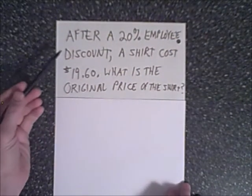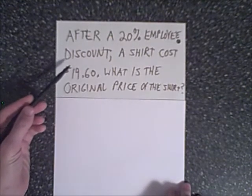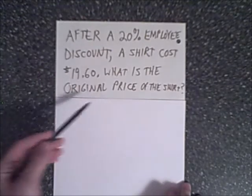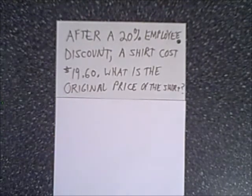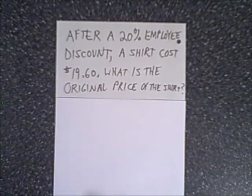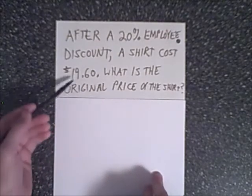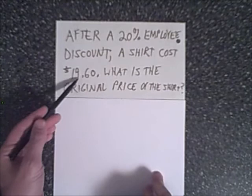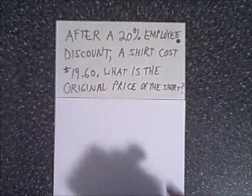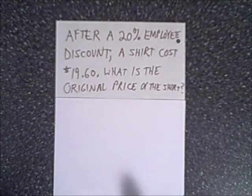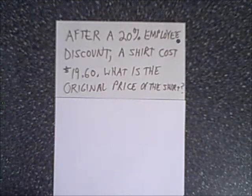We have a 20% employee discount and a shirt that costs $19.60 after the discount. What is the original price of the shirt? I really like this question because some students might make the casual mistake of saying we have $19.60 — let's just take 20% off and find what 20% of this is and add it back. But that isn't correct. You need to do percentages in the correct order and have the proper basis amount.